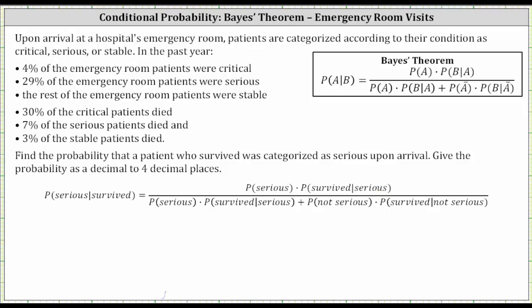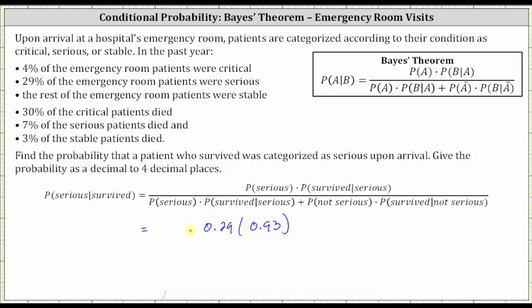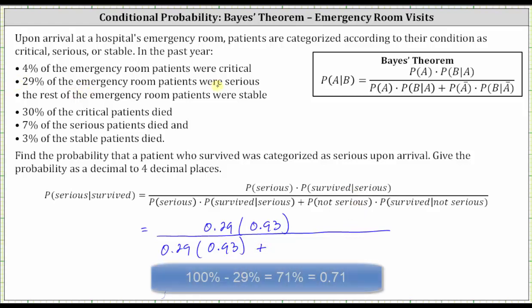The probability of serious is given as 29%, or 0.29 as a decimal, times the probability the patient survived given serious. We know 7% of the serious patients died, and therefore 93% of the serious patients survived, giving us 0.93. In the denominator, we again have 0.29 times 0.93, plus the probability of not serious: 100% minus 29% equals 71%, or 0.71.